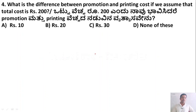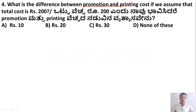The fourth question is: what is the difference between promotion and printing cost, if we assume that the total cost is Rs. 200,000? The fifth and last question is: if 1000 copies are published and the transportation cost on them amounts to Rs. 15,000, then what should be the selling price per book so that the publisher can earn a profit of 20%?